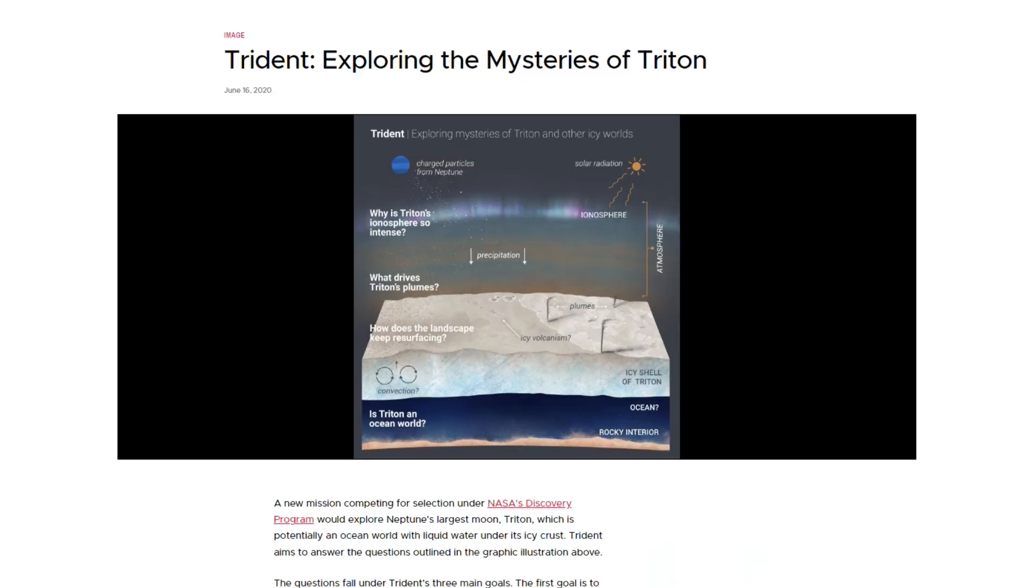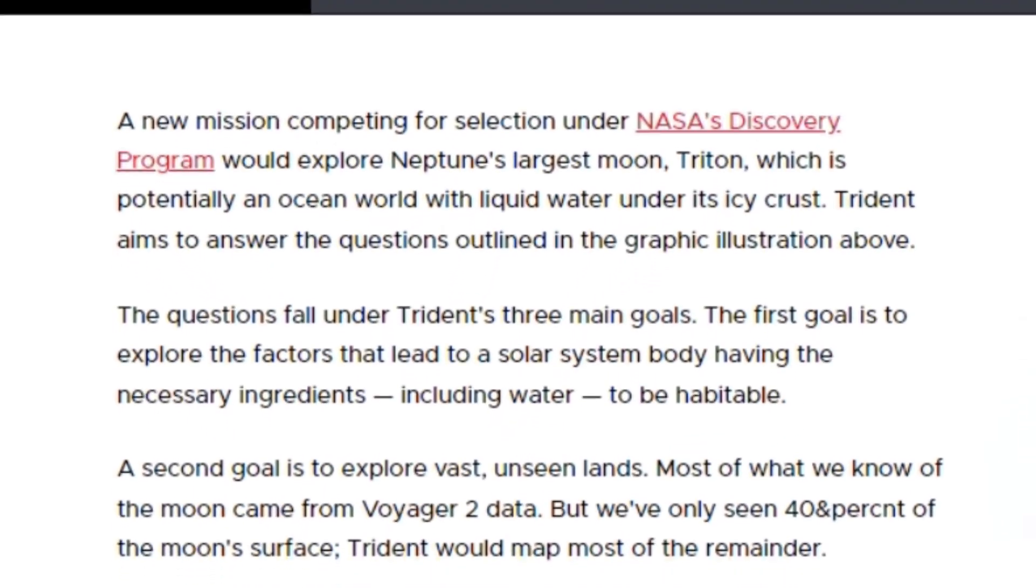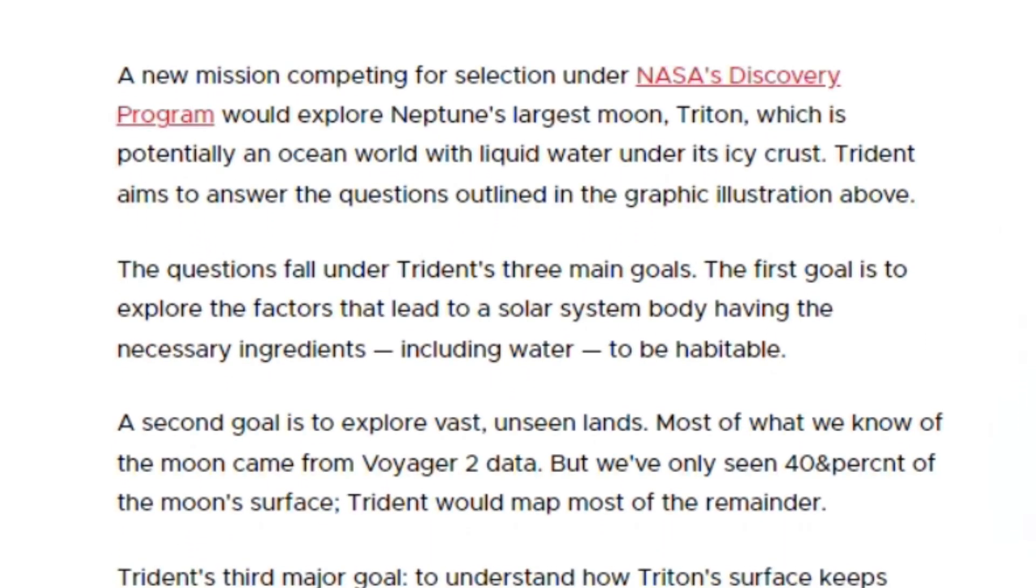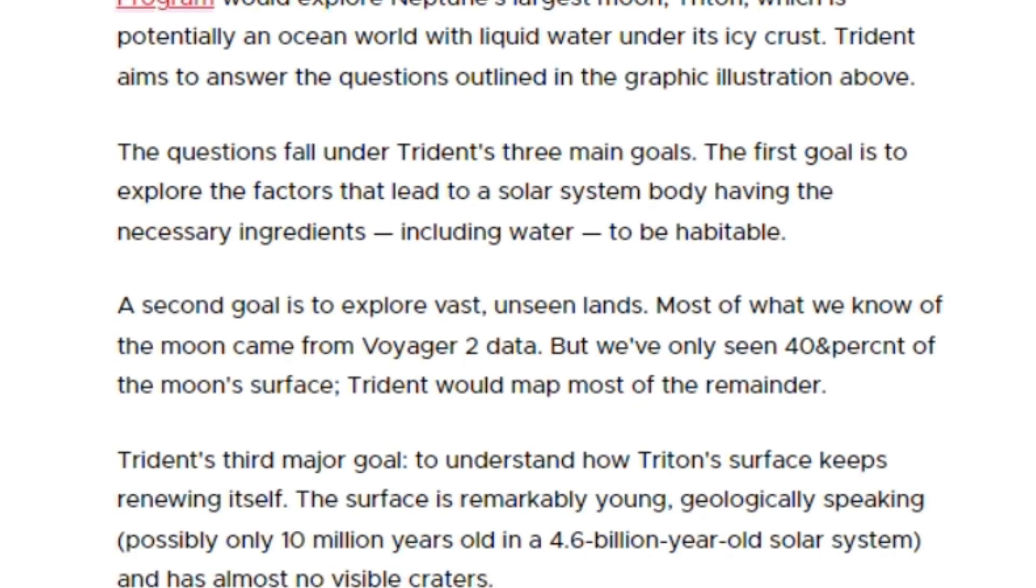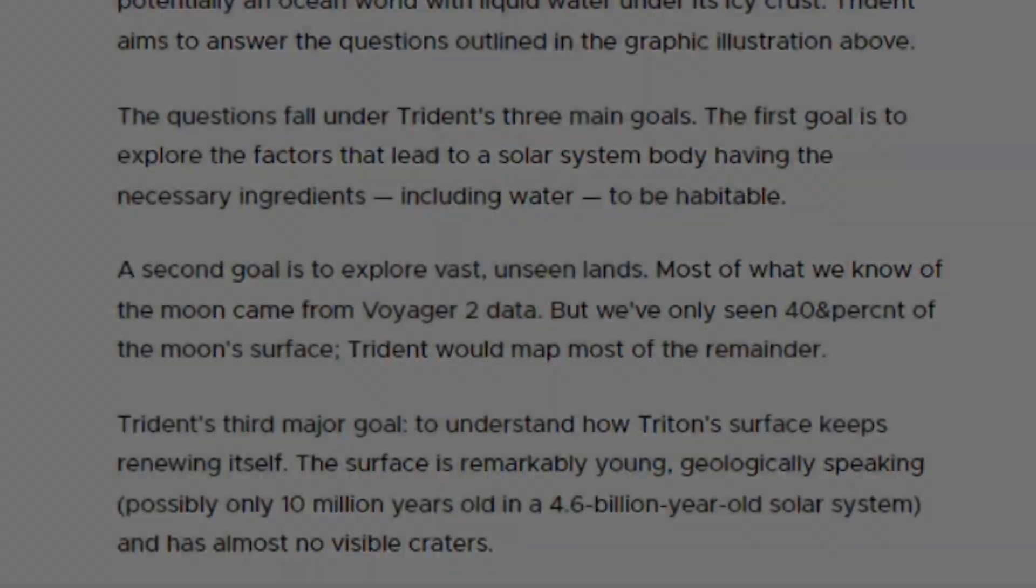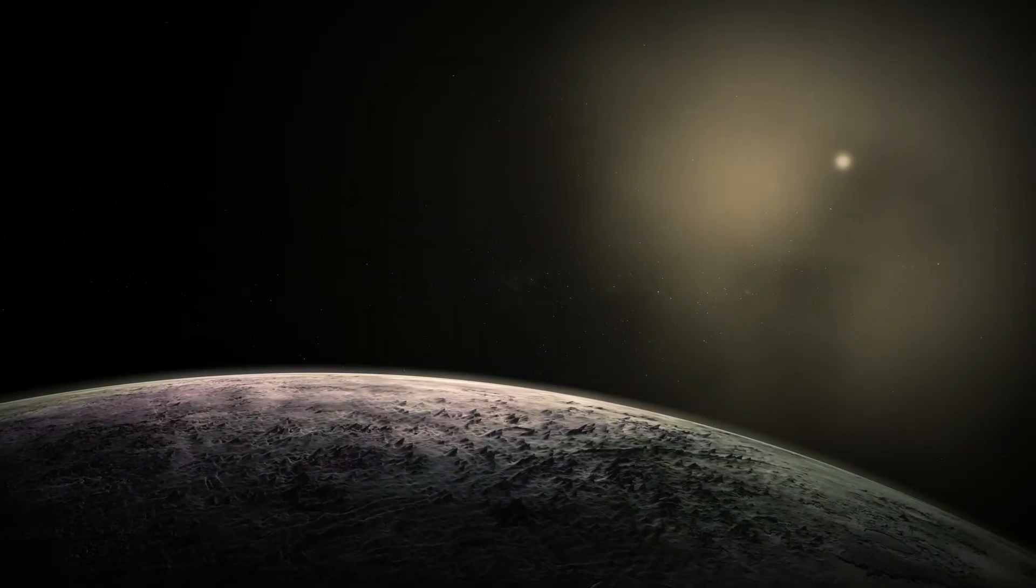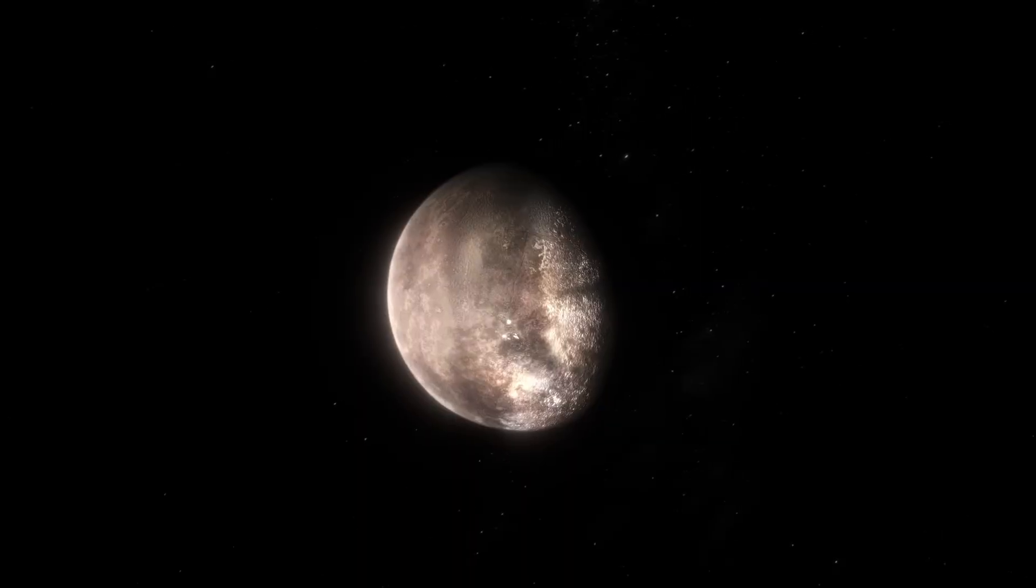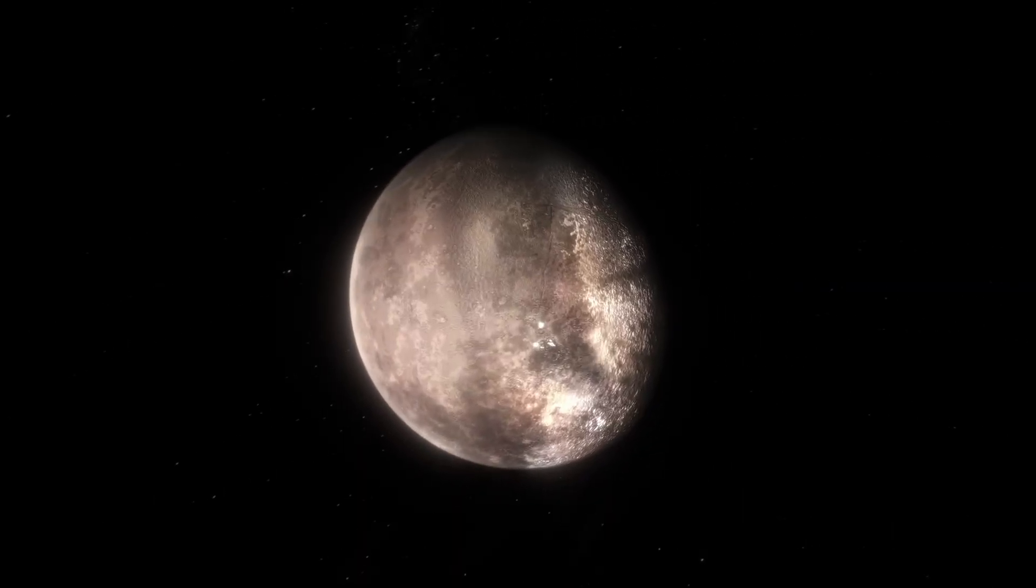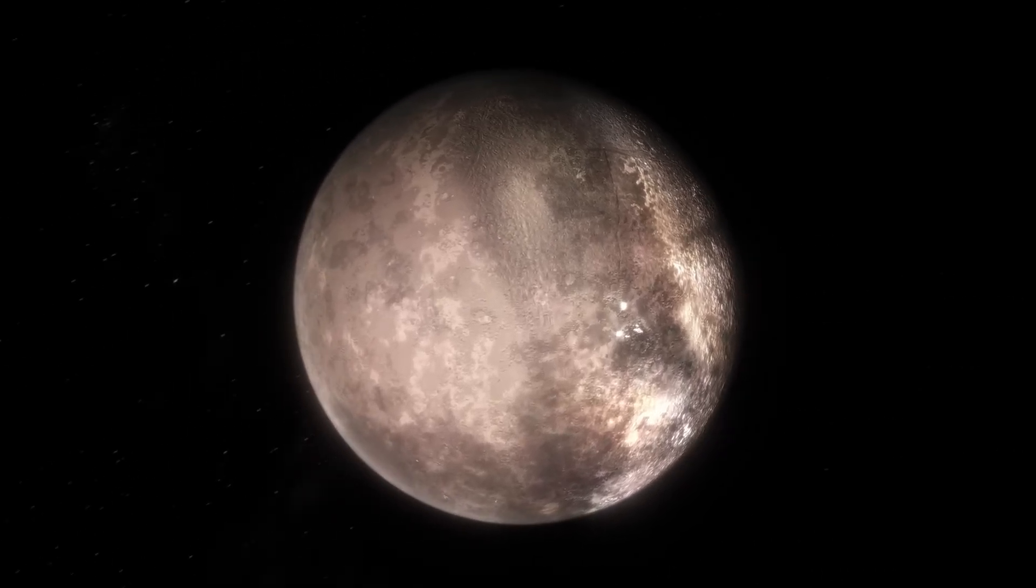Trident is a proposed mission to explore Triton, the largest moon of Neptune, which is believed to harbor an ocean beneath its icy surface potentially. Competing for selection under NASA's Discovery program, Trident seeks to investigate Triton's habitability, uncharted terrains and surface renewal processes. The mission plans to approach Triton within 311 miles or 500 kilometers of its surface, sampling its ionosphere and conducting magnetic induction measurements to assess the presence of an ocean.